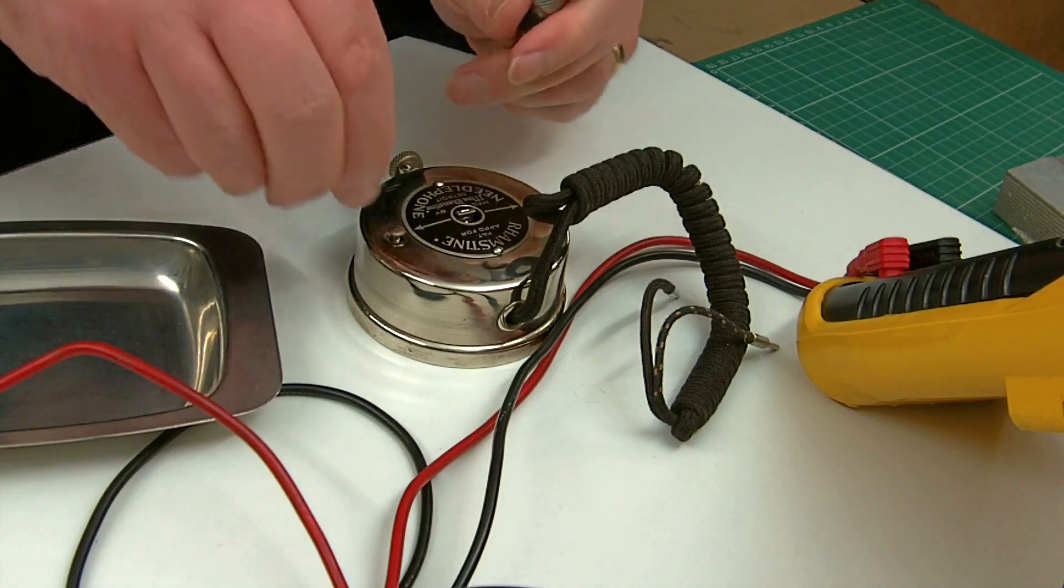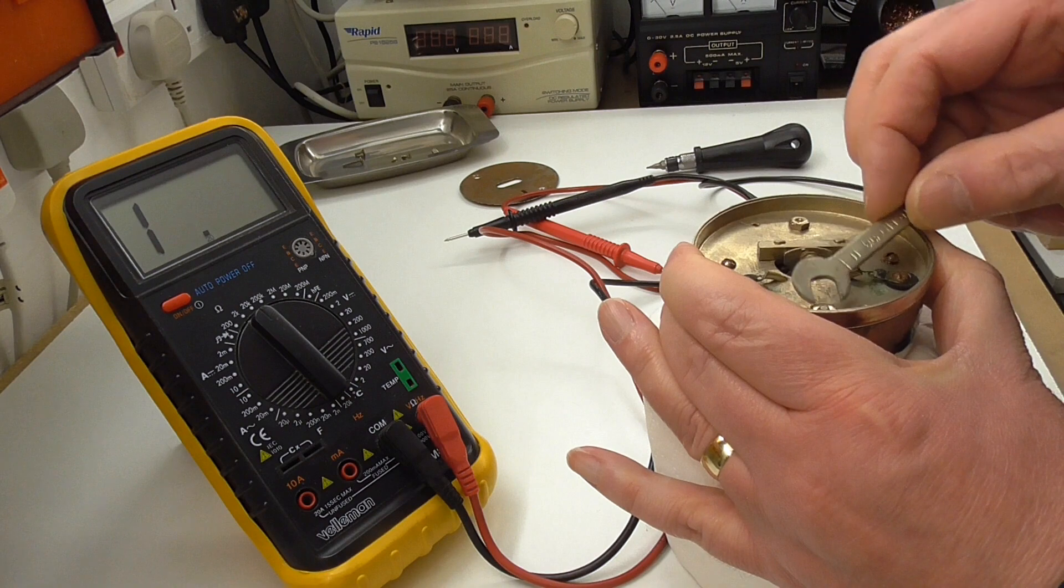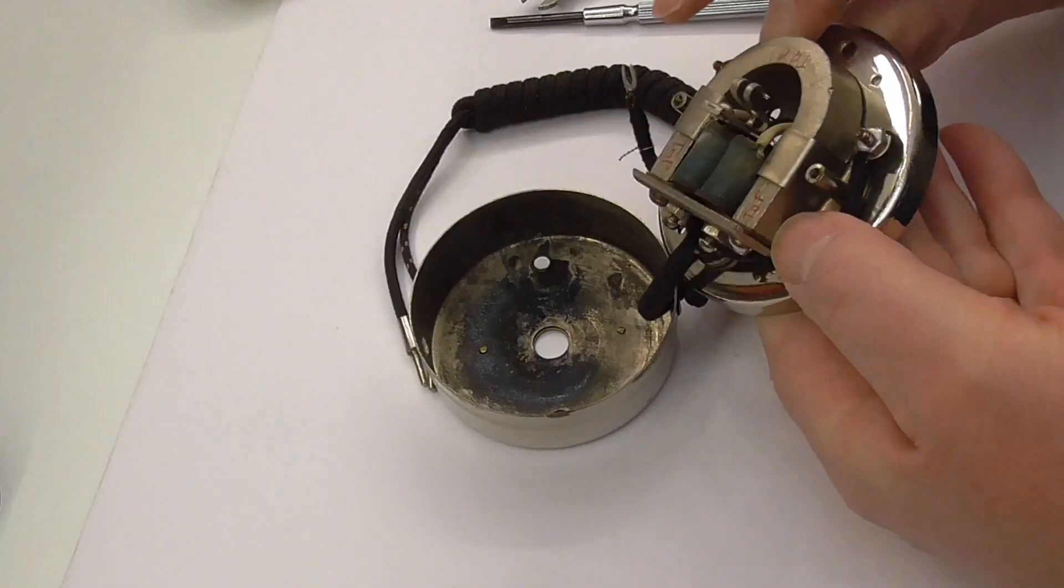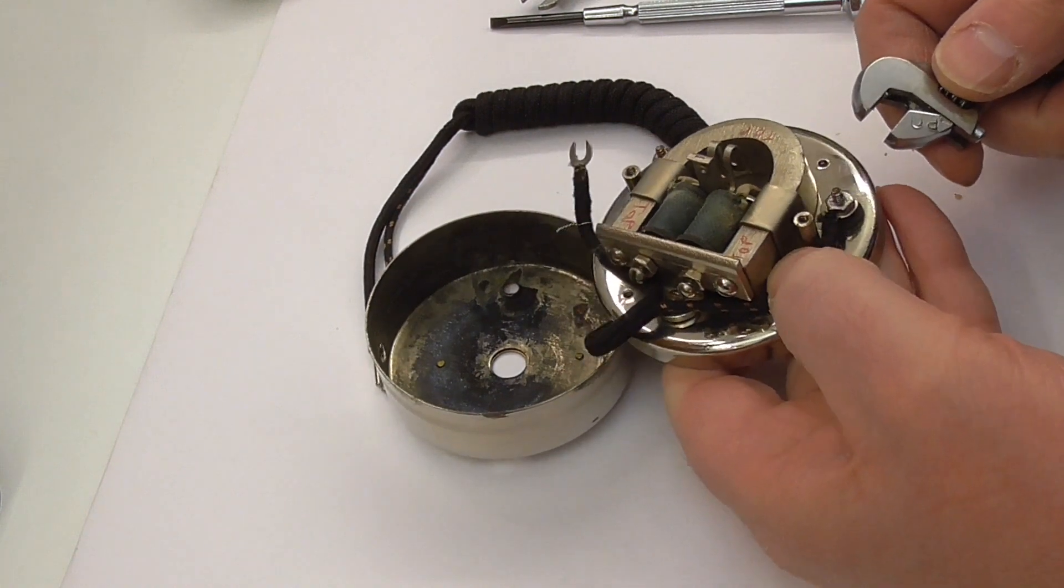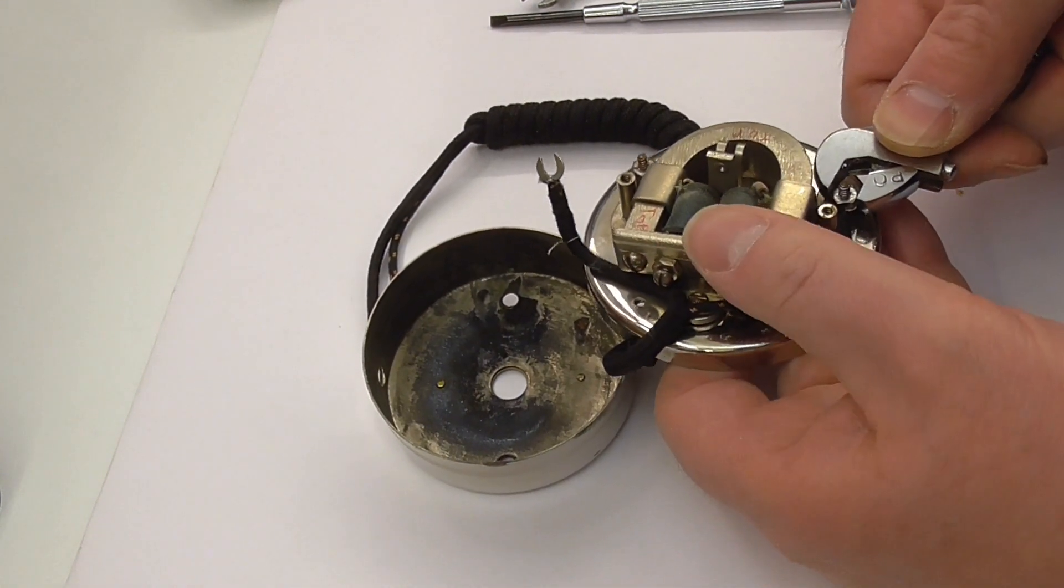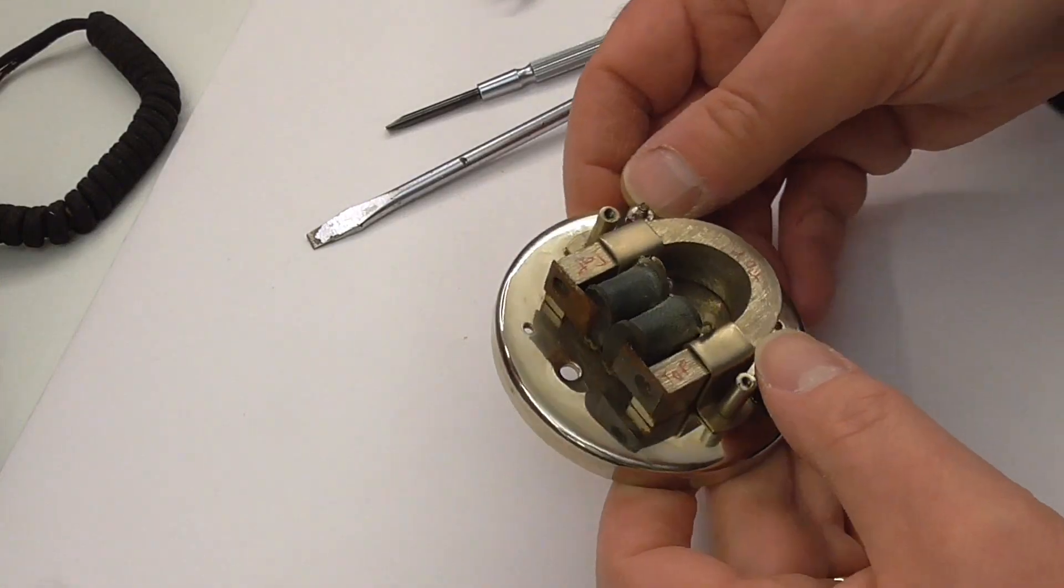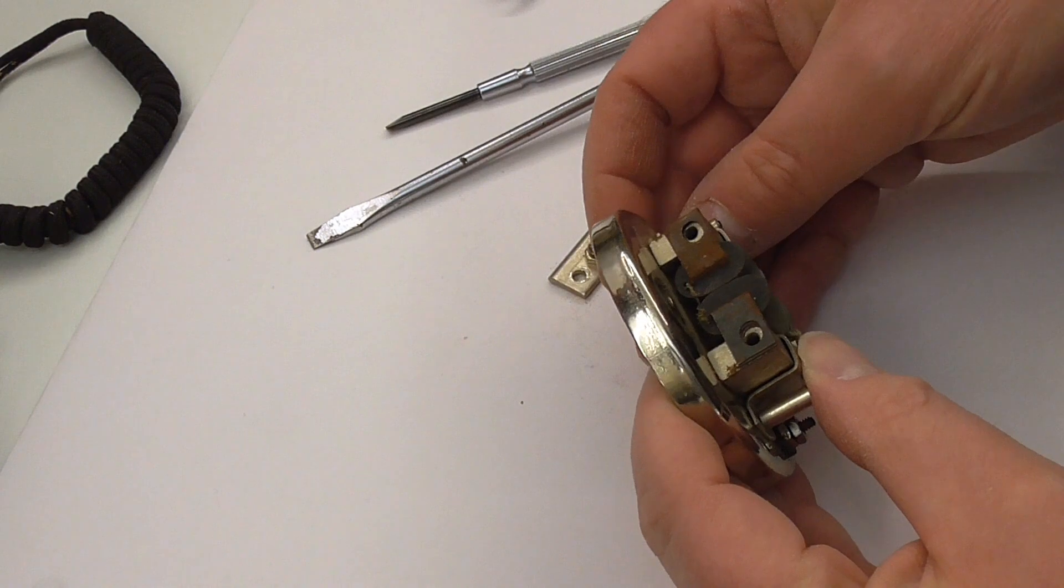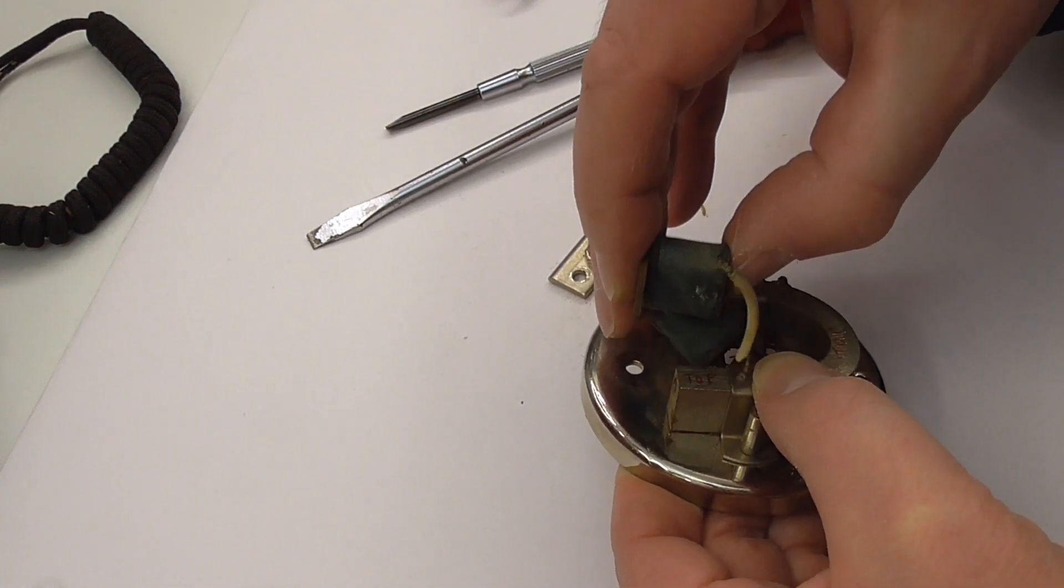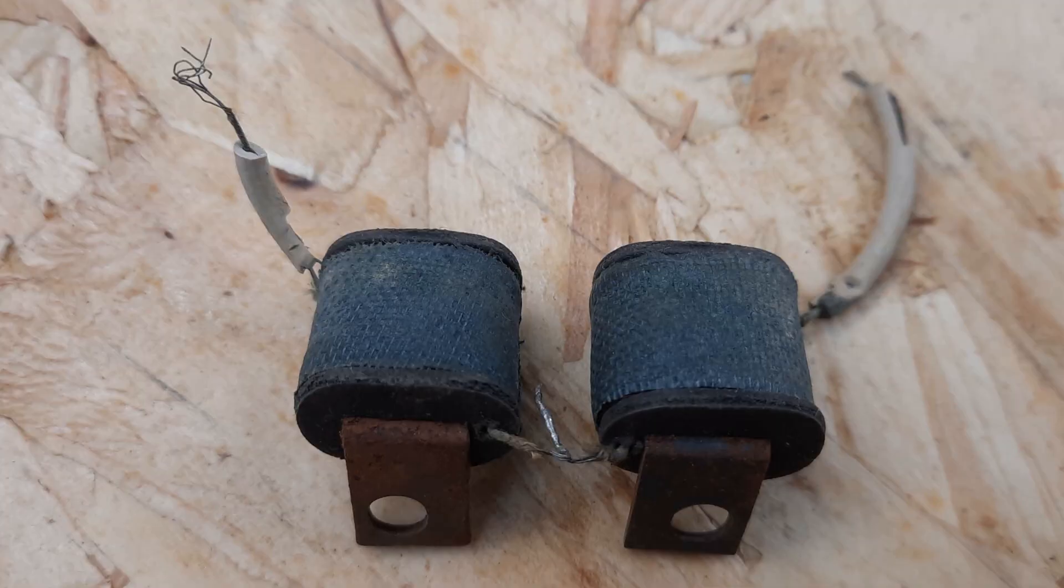I took it to pieces to check the coil inside. It's actually two coils. These form an electromagnet to convert the electrical signals into vibrations. So it doesn't seem to be anything really holding that in place apart from possibly magnetism. There we are. Coils are out.